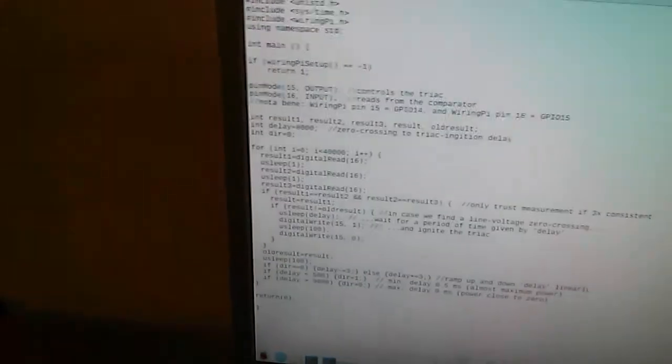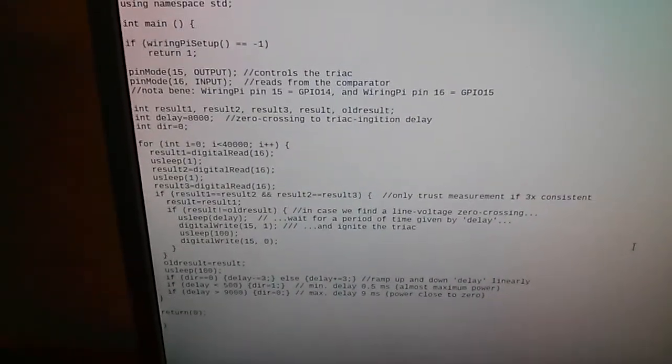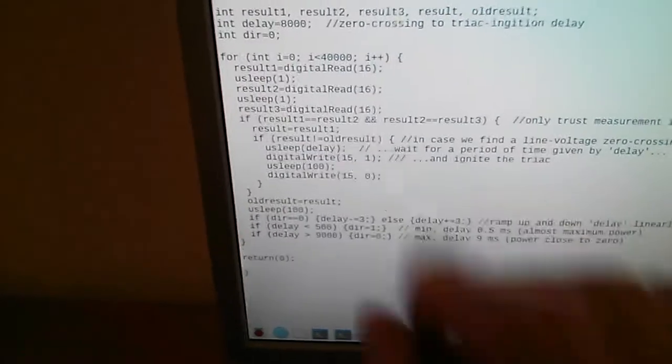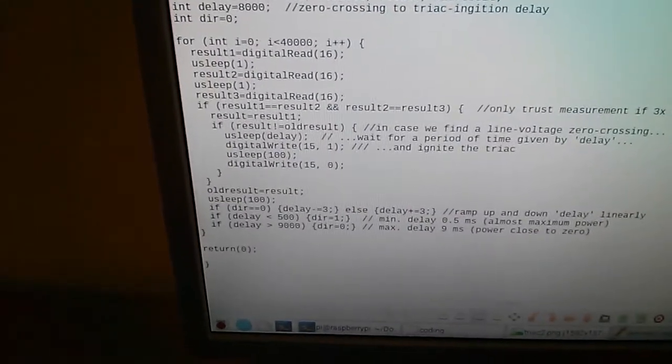So that's what it does. Let's have a look at the program code. So it's quite simple, actually. What I'm doing, I'm detecting rising or falling edges in this square wave TTL signal.